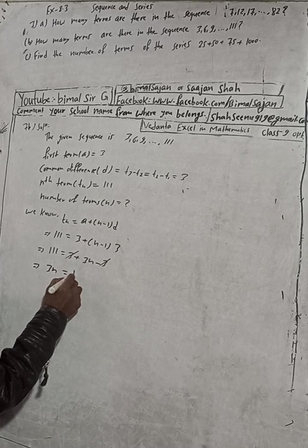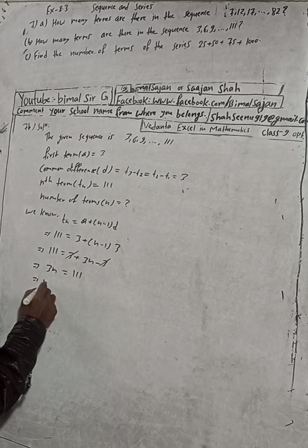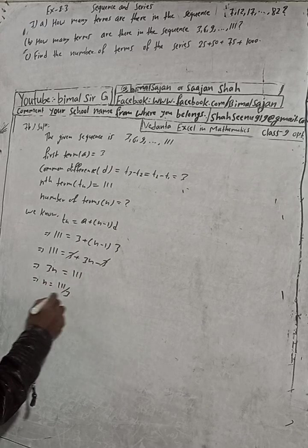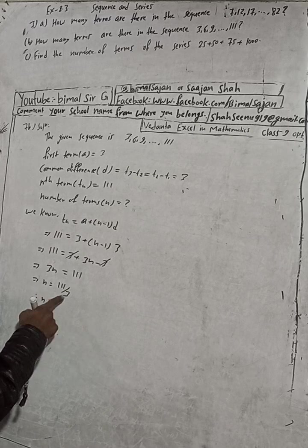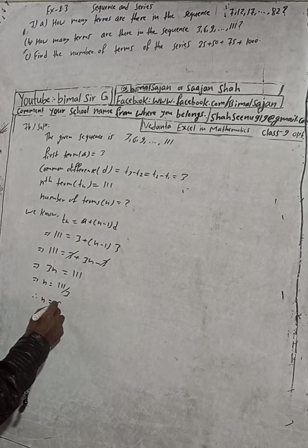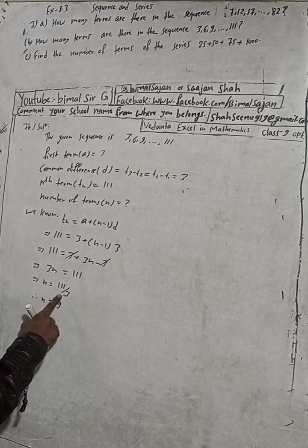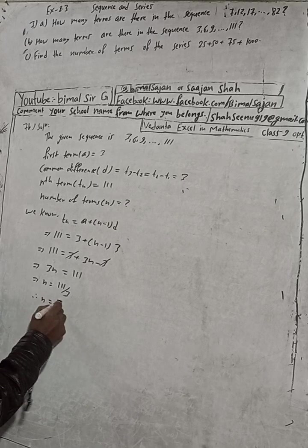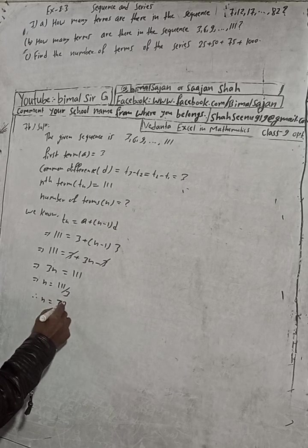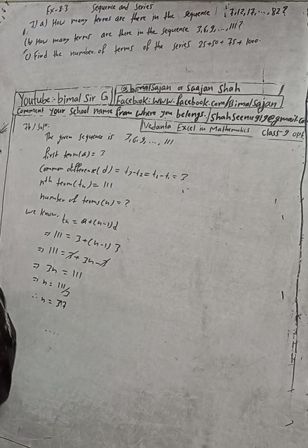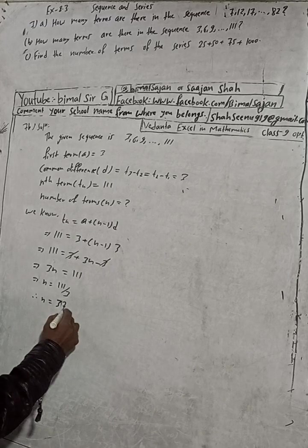This can be written as 111 equals 3n. This implies n is equal to 111 divided by 3. Therefore n is equal to 37.